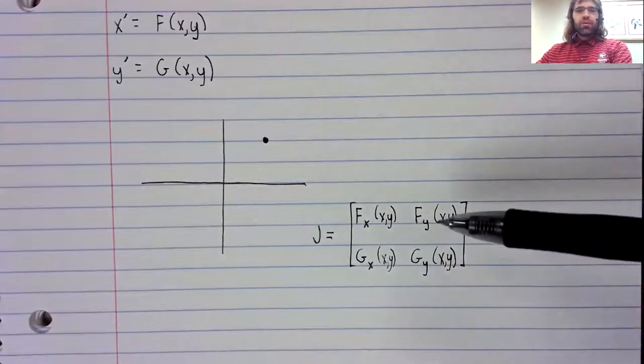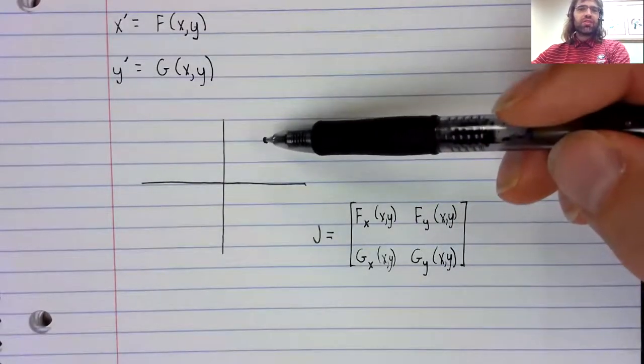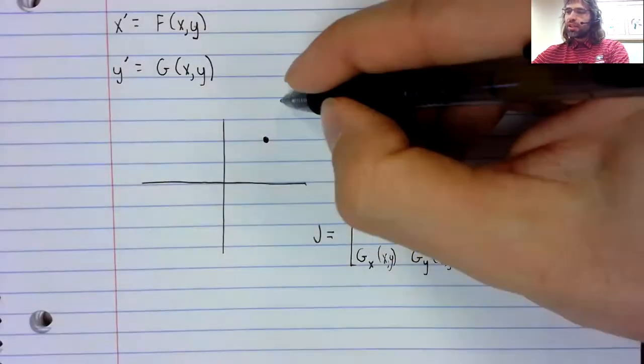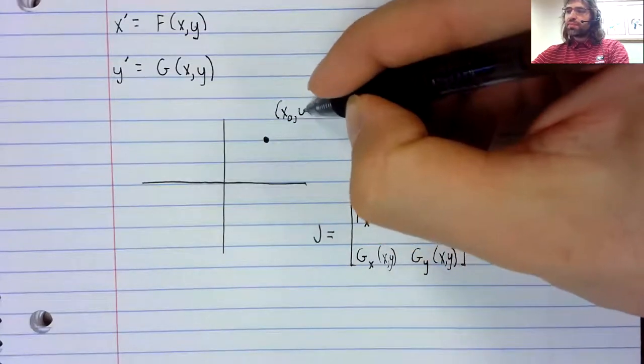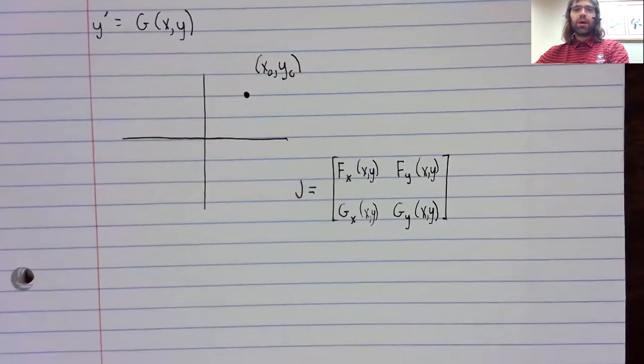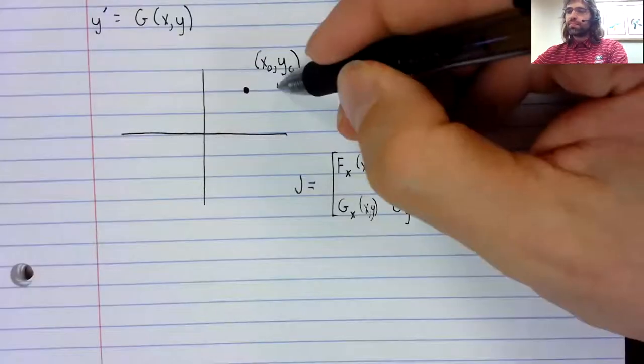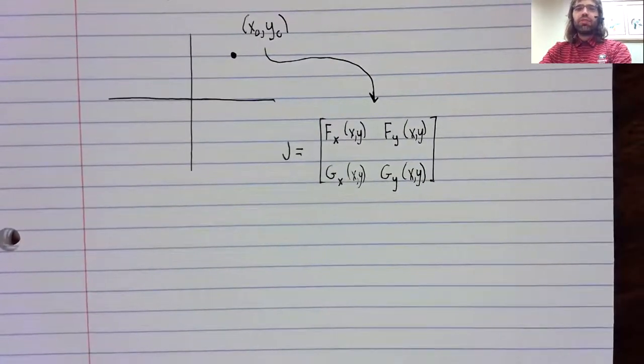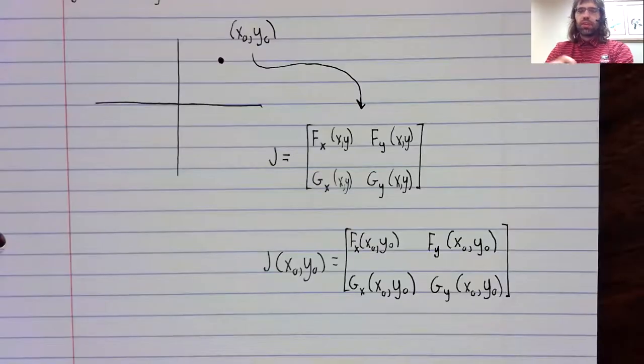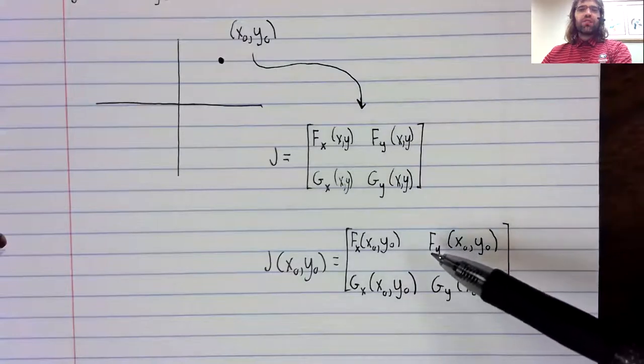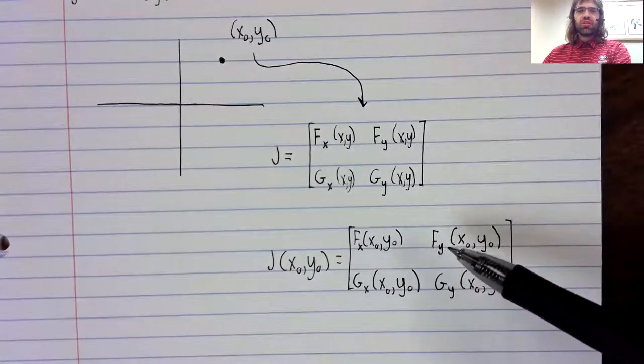And now this Jacobian is going to help us classify the stability and type of this fixed point. Let's give this fixed point a name. Let's call it x zero comma y zero. We'll take x zero and y zero and we will plug it into the Jacobian.